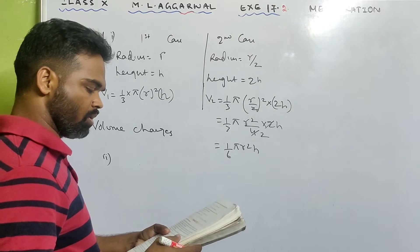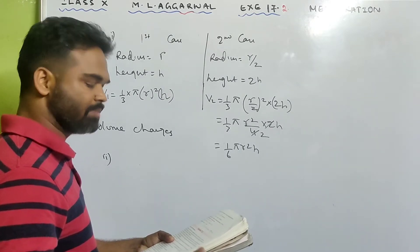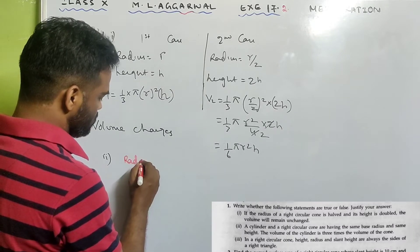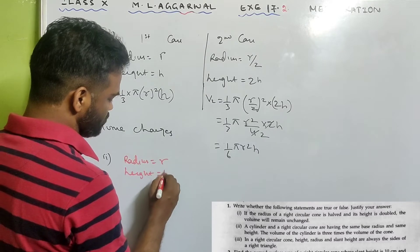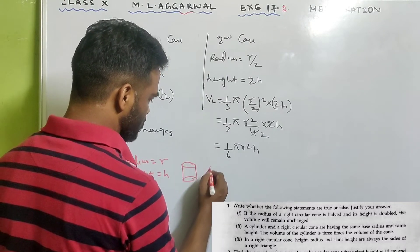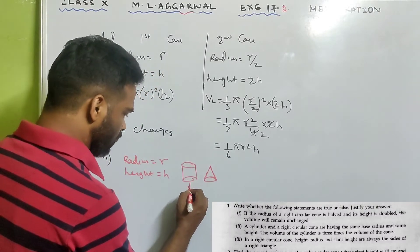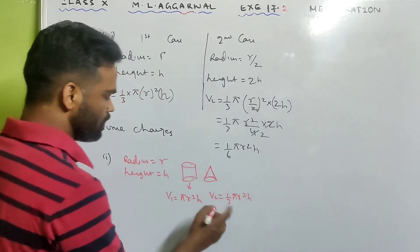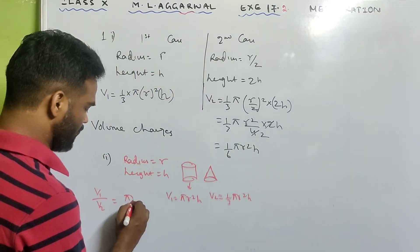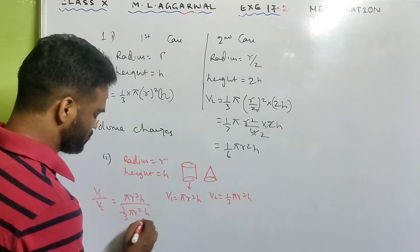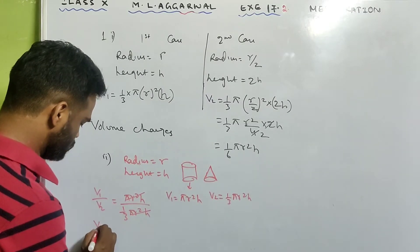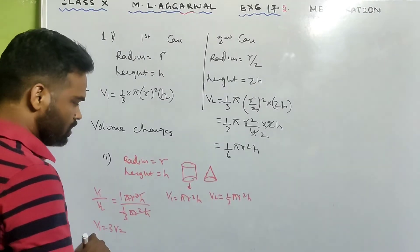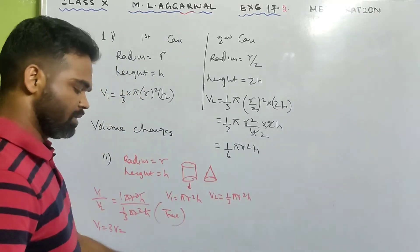Number 2: A cylinder and a right circular cone have the same base radius and same height. The volume of the cylinder is 3 times the volume of the cone. Suppose radius = r and height = h for both. Volume of cylinder V1 = πr²h; volume of cone V2 = (1/3)πr²h. Dividing: V1/V2 = πr²h ÷ (1/3)πr²h = 3. So V1 is 3 times V2 — that is a correct statement.